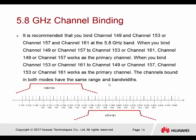Channel bonding is also possible and recommended in the 5 GHz band, because 5 GHz has many channels and less crowded channel edges. We can aggregate channels within 5 GHz, for example 149 plus 153, or 157 plus 161.